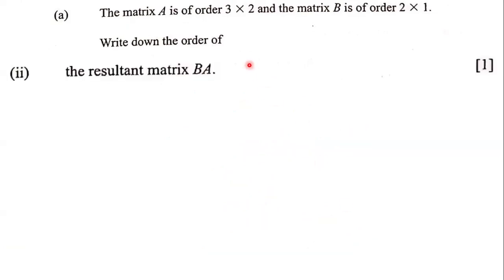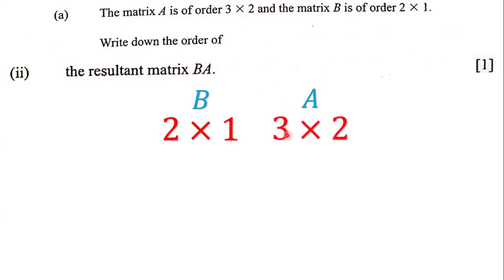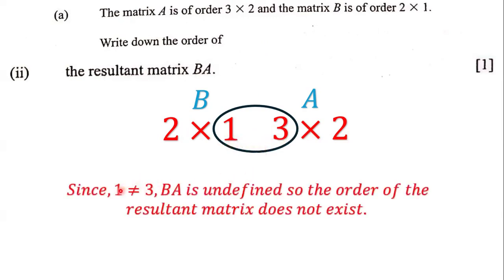Next, write down the order of the resultant matrix B times A. We know that B has the order 2 by 1, and A has the order 3 by 2. If you notice carefully, these two inner numbers are not the same — 1 is not equal to 3. Since these two numbers are not equal, B times A is undefined, and the order of the resultant matrix does not exist.